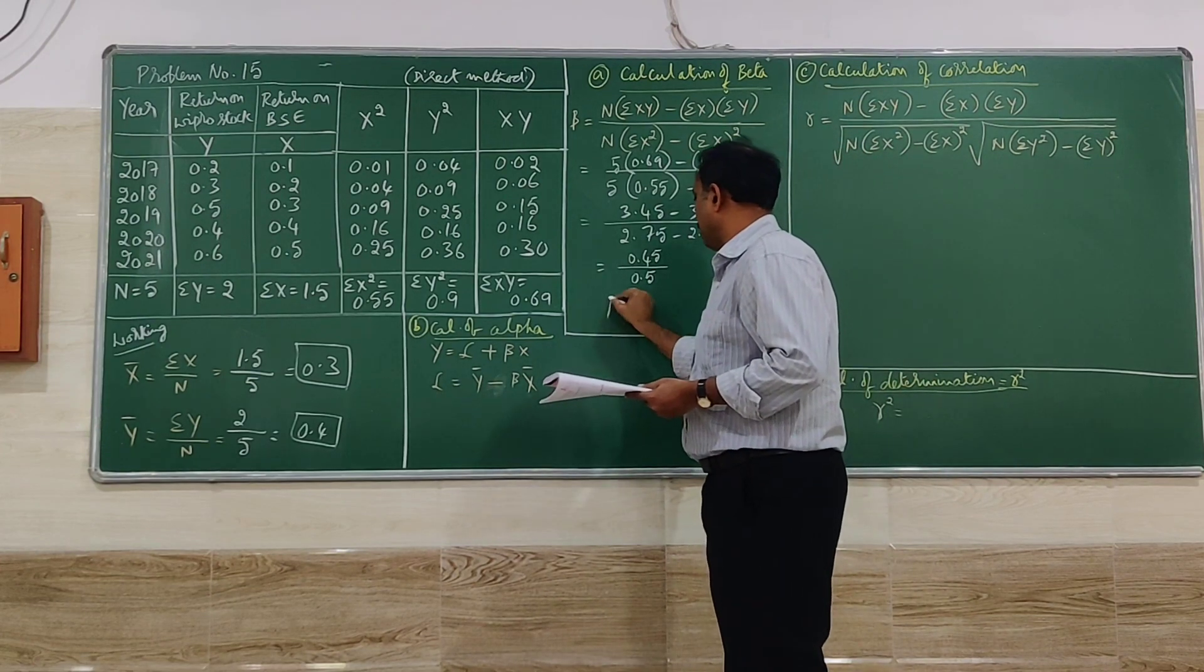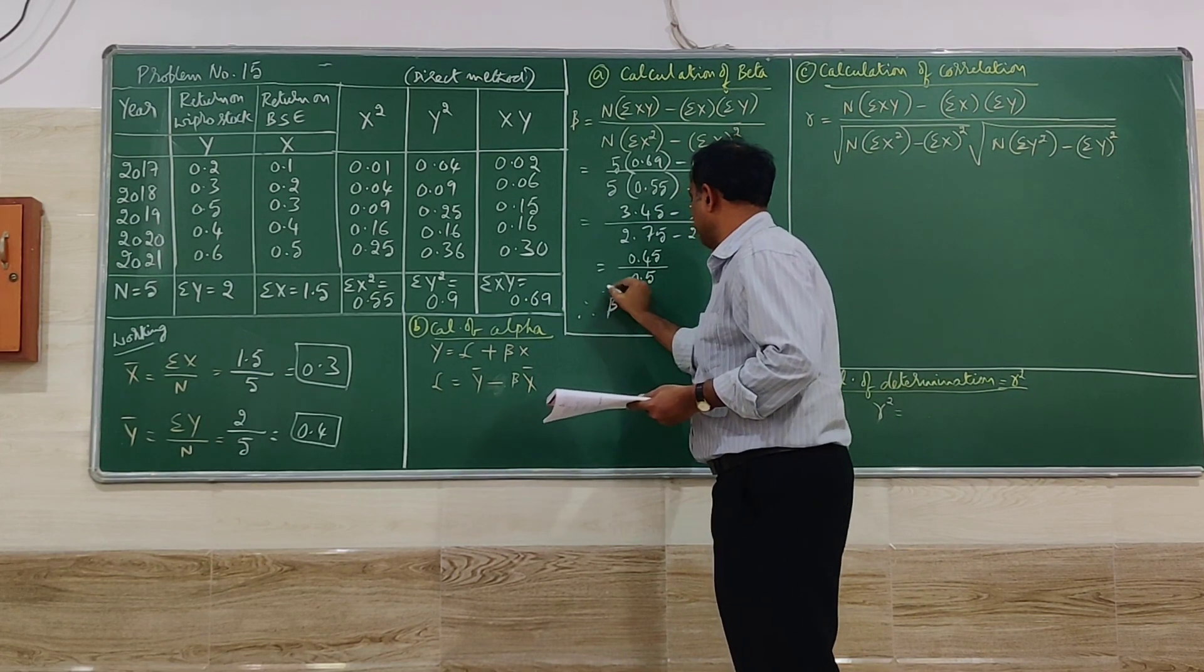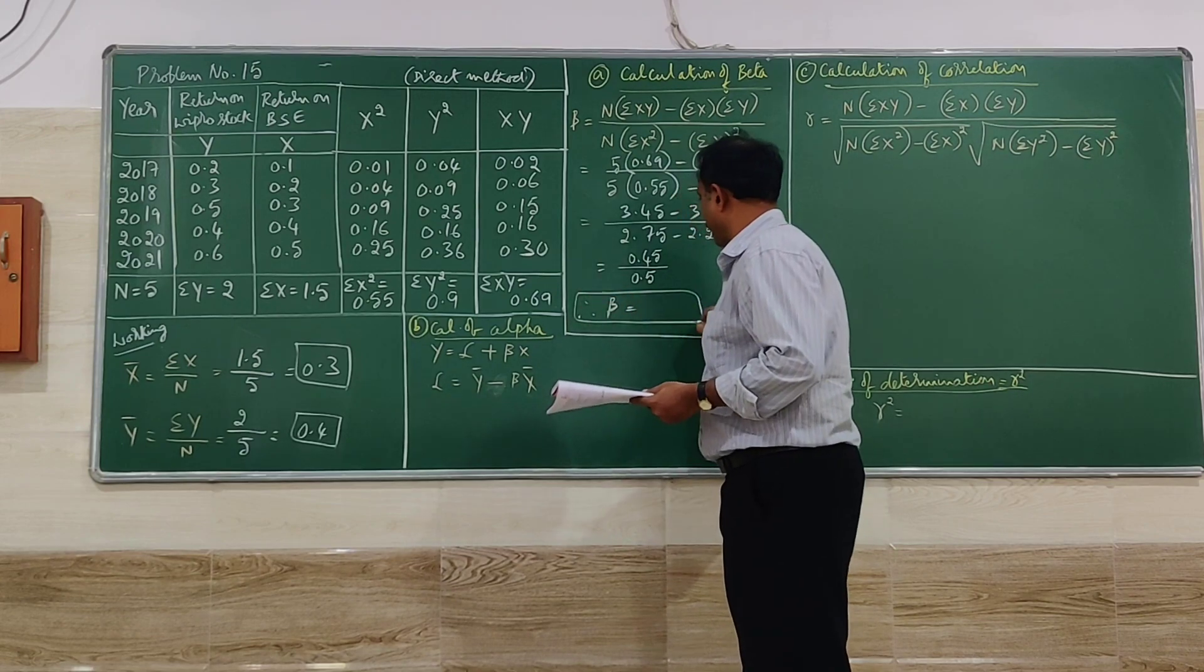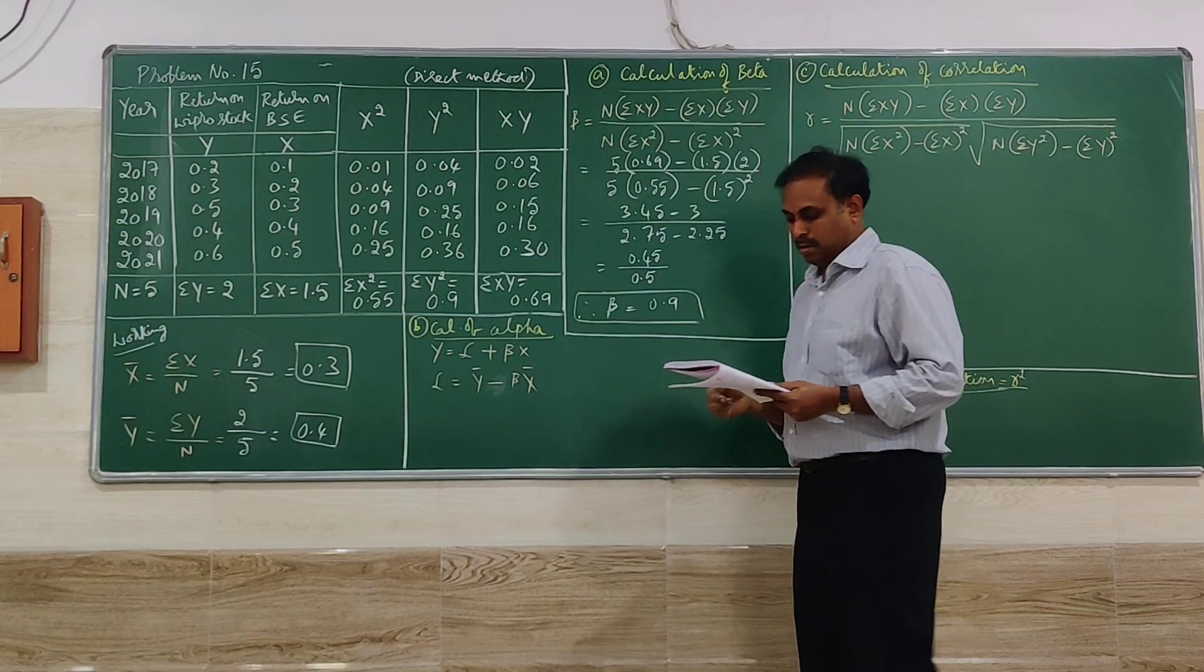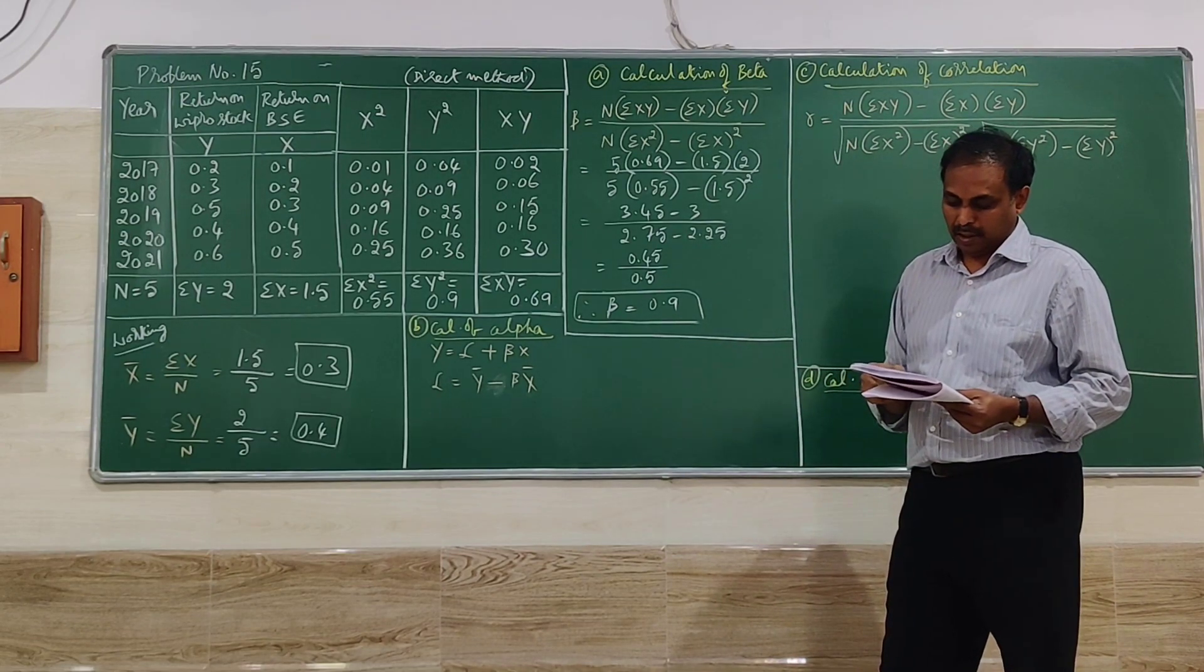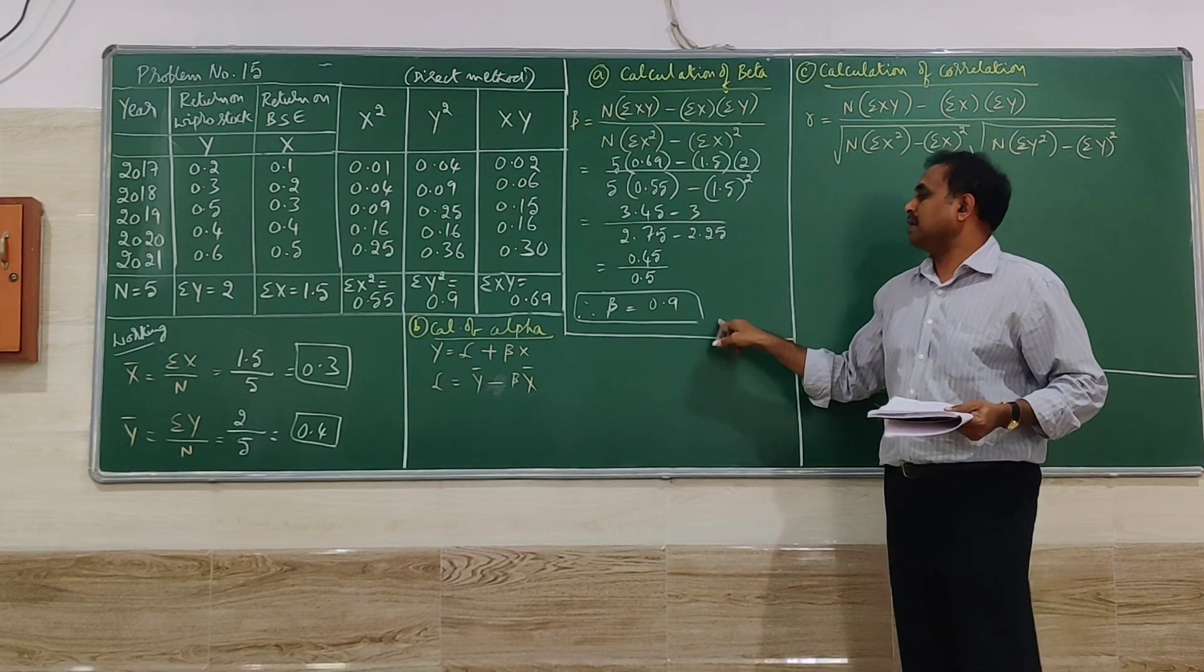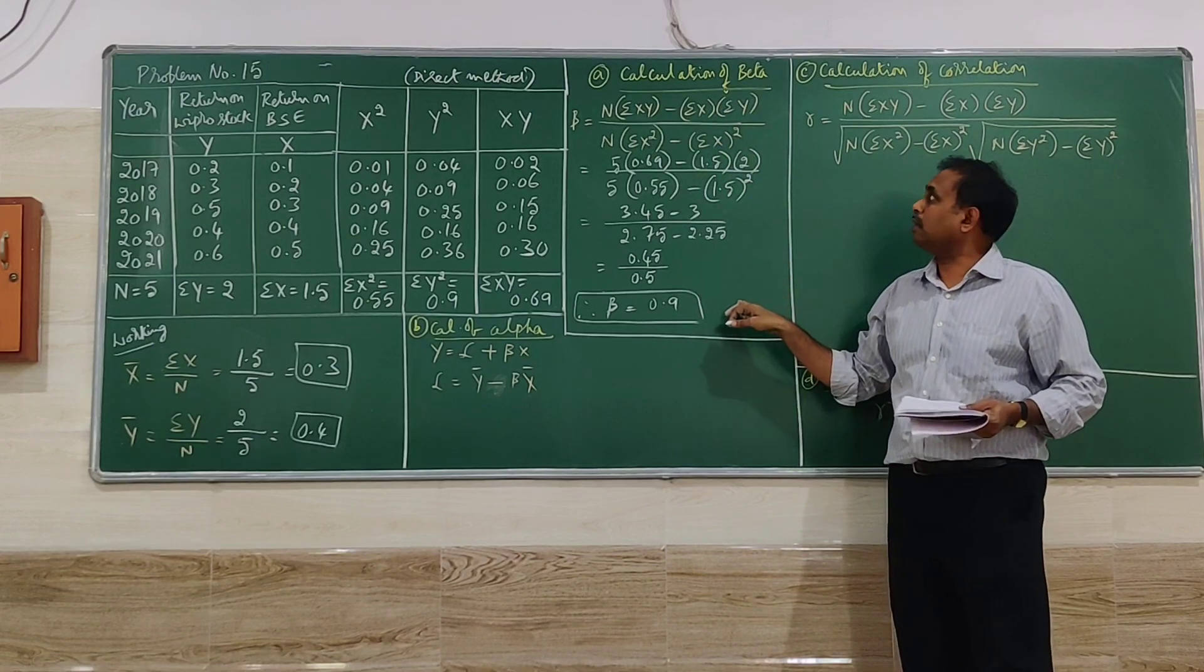So the beta value will be 0.9. So that is the first calculation, calculation of beta.